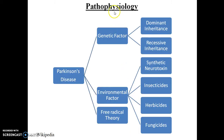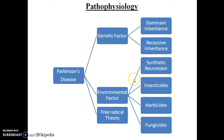The pathophysiology of Parkinson's disease includes genetic factors, environmental factors, and the free radical theory of aging. Genetic factors include dominant inheritance and recessive inheritance. Environmental factors include synthetic neurotoxins, insecticides, herbicides, and fungicides.